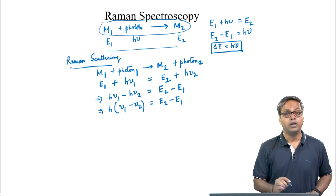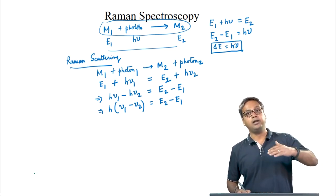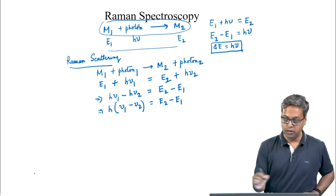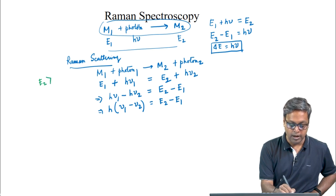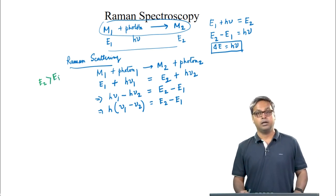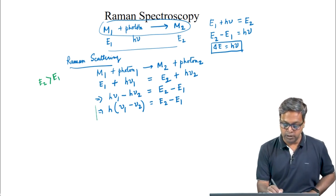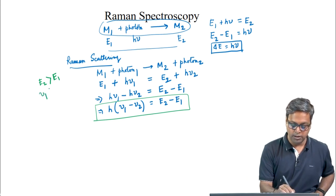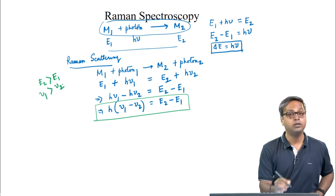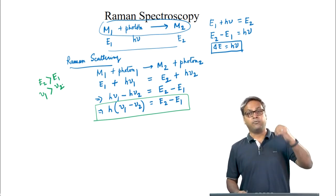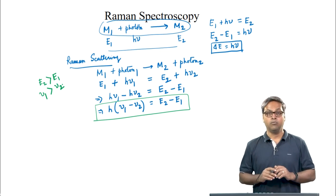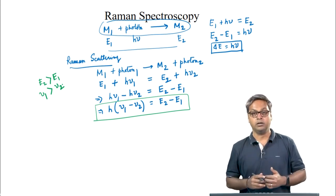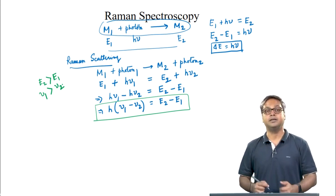If the matter goes to a higher energy level during the process — in other words if E₂ is greater than E₁ — then from this equation we can say that ν₁ is greater than ν₂, meaning the frequency of the scattered radiation will be less, or in other words the wavelength of the scattered radiation will be longer than that of the incident radiation.